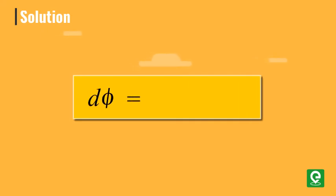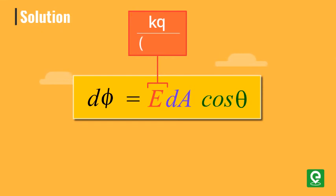Therefore, the electric flux through elemental ring d phi is equal to E into dA cos theta. Let's substitute the values of the electric field equal to k q by l square plus x square.